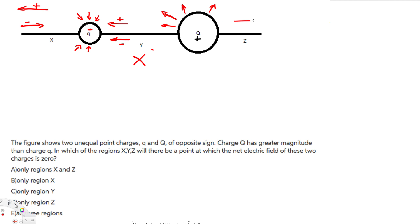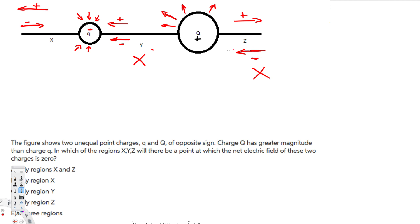Let's think about region Z. The positive charge field goes in this direction and the negative charge field goes in the other direction, so there is a chance for cancellation. However, the positive charge is nearer to this region and has the bigger magnitude, so the electric field from the positive charge is going to be greater than that of the negative charge. Therefore, there's no way these can cancel and be zero at region Z.